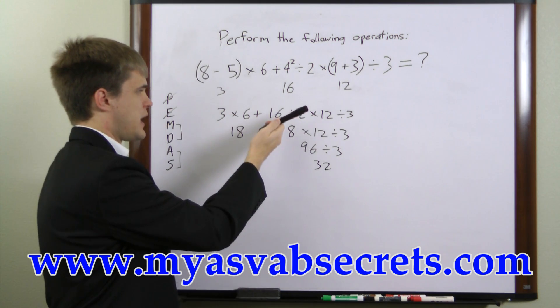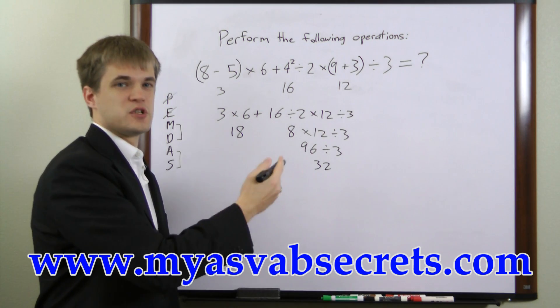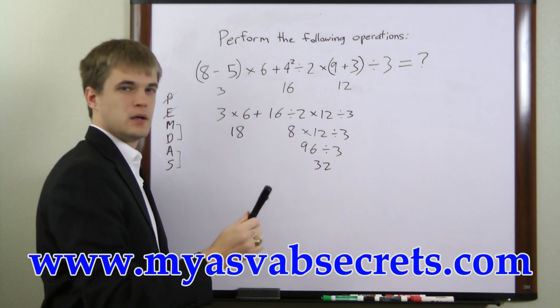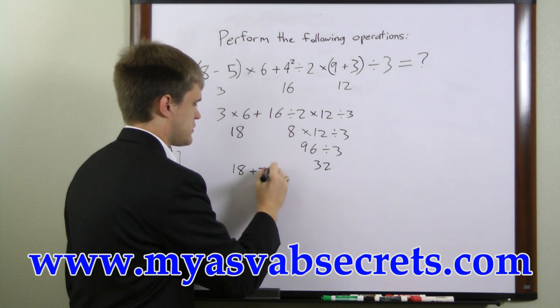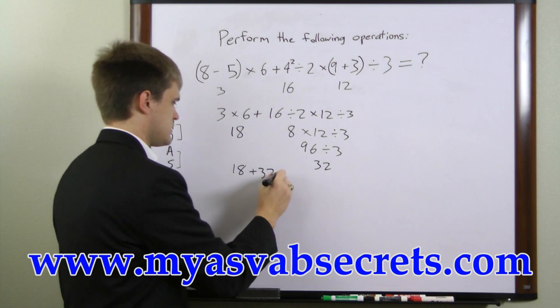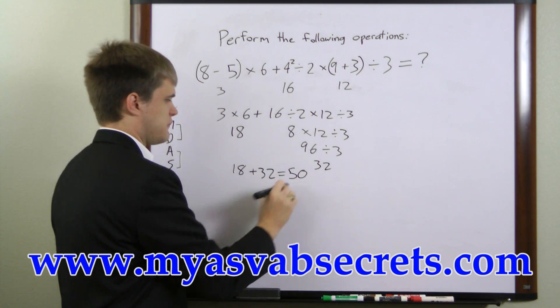And so you see we had a string of operations here with division and multiplication and we just work from left to right. So what we have left now is 18 plus 32. That's just one operation. We'll add these two up and we get 50.